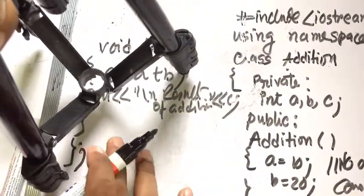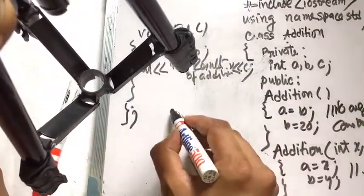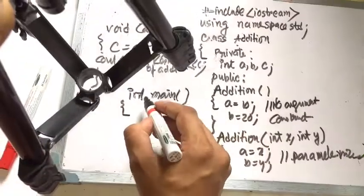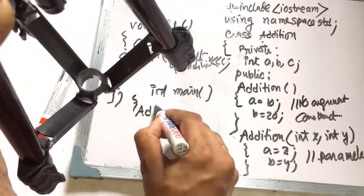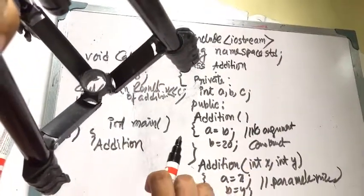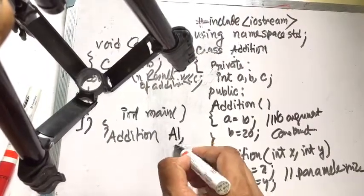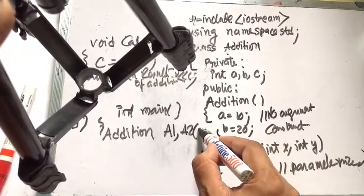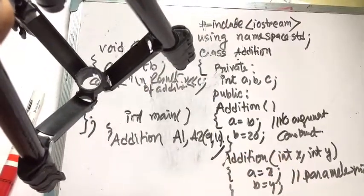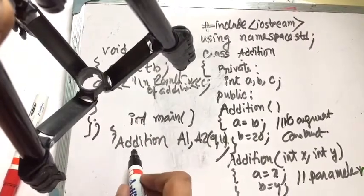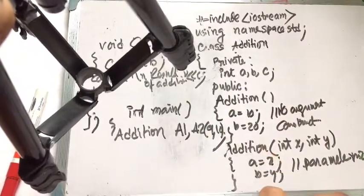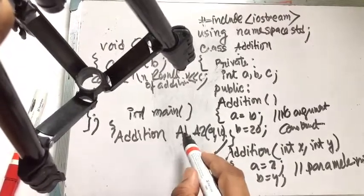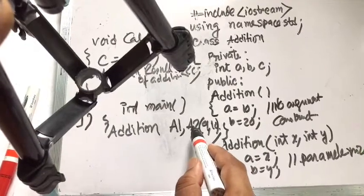Now the main function. The class name is 'addition'. We create object a1 — the class name is addition and object name is a1. Another object is a2 with parameters 9 and 10. The class is a logical concept — a blueprint — and the object is the physical concept, the variable of the class.